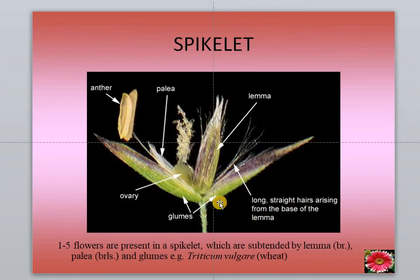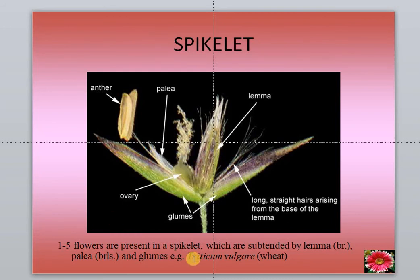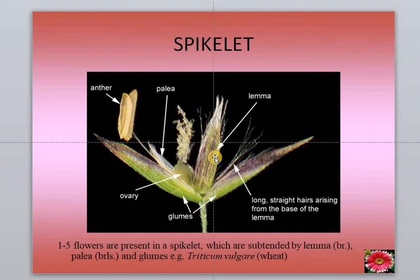This is called a spikelet, as seen in the case of paddy. There are large bracts called glumes, then there is another bract called lemma, and another bract called palea, and then the ovary. Flowers are present in a spikelet where the sessile flowers are subtended by bracts. Each flower is subtended by lemma, palea, and glumes — where lemma is a bract, palea is a bracteole, and glumes are leaf-like structures below the bract.